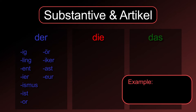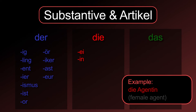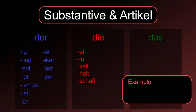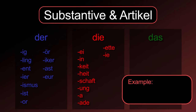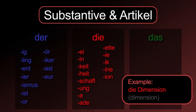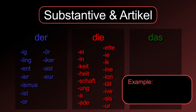Typical suffixes for feminine nouns. -ei: die Bücherei. -in: die Agentin. -keit: die Möglichkeit. -heit: die Besonderheit. -schaft: die Wissenschaft. -ung: die Meinung. -a: die Firma. -ade: die Schokolade. -ette: die Tablette. -ie: die Geografie. -ik: die Logik. -ine: die Maschine. -ion: die Dimension. -tät: die Universität. -ive: die Alternative. -sis: die Dosis. -ur: die Natur.